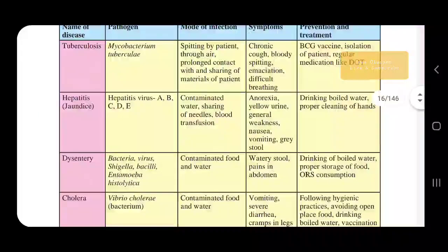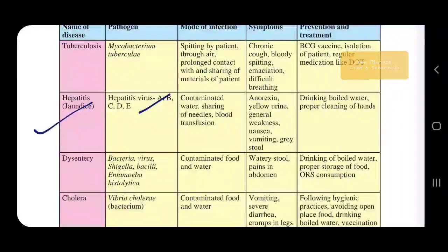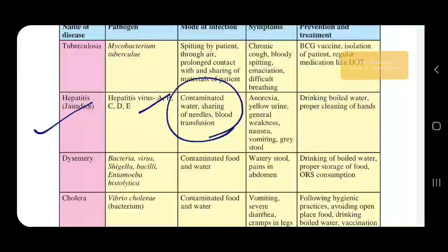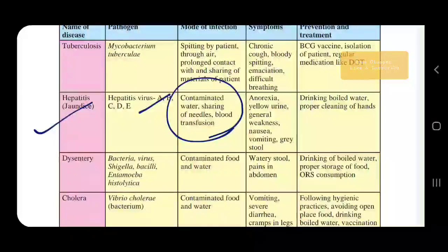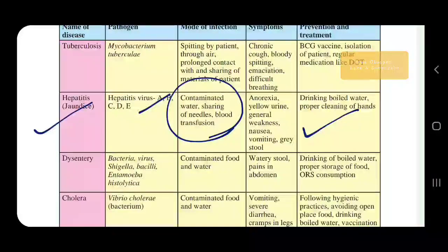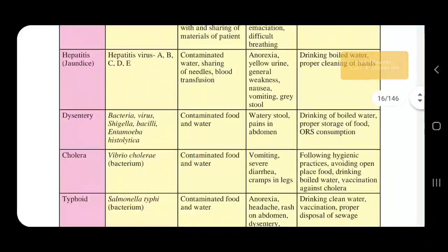Next we have hepatitis, which is further divided into types: Hepatitis A, B, C, D, and E. The mode of infection includes contaminated water, sharing of needles, and blood transfusions. Symptoms include yellow urine, general weakness, nausea, vomiting, and grey stool — overall not feeling well. Prevention includes boiling your drinking water and proper cleaning of your hands, which is the most essential thing.